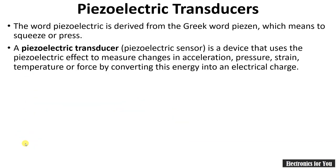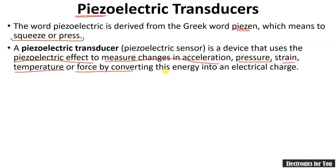Now, piezoelectric transducer — the word piezo itself came from a Greek word 'piezen', which means squeeze or press. A piezoelectric transducer is a device that uses the piezoelectric effect. It is used to measure changes in acceleration, pressure, strain, temperature or force by converting this energy into an electrical signal.